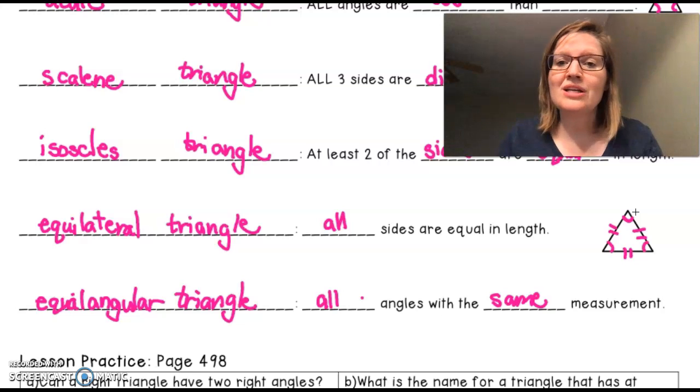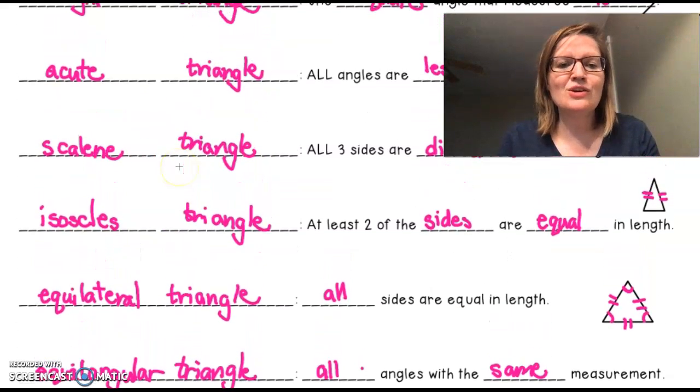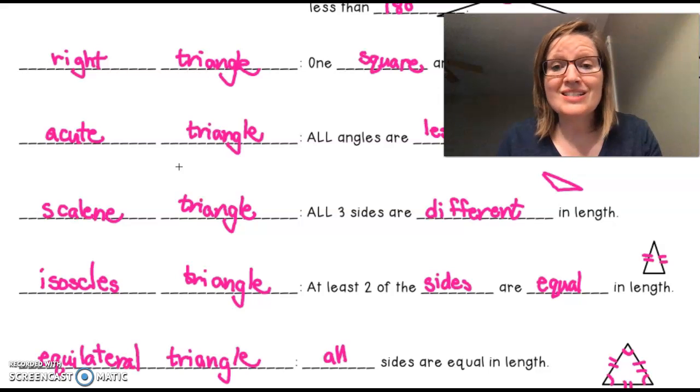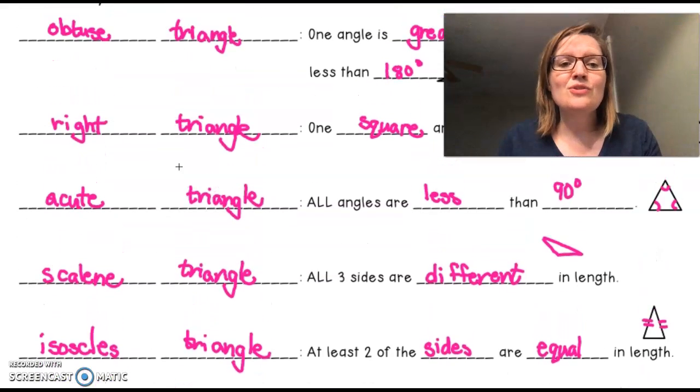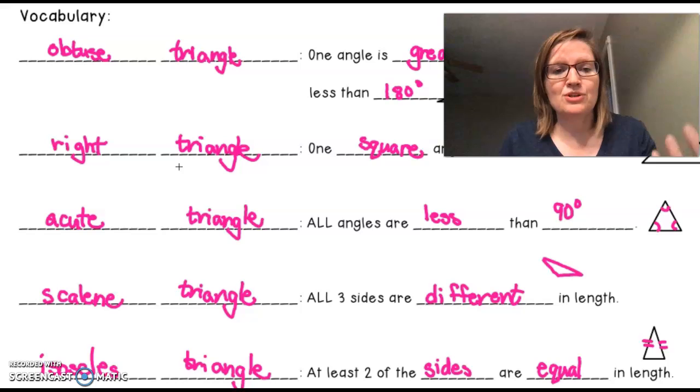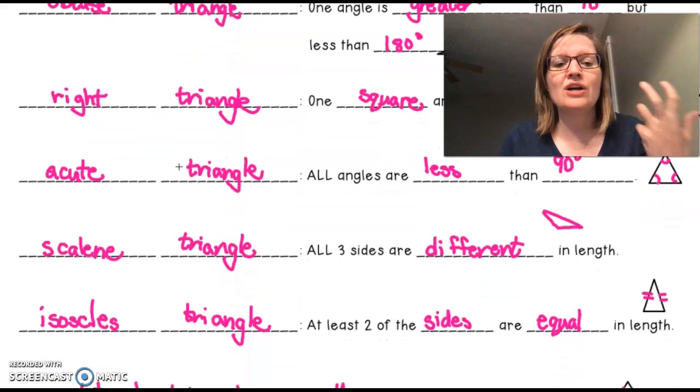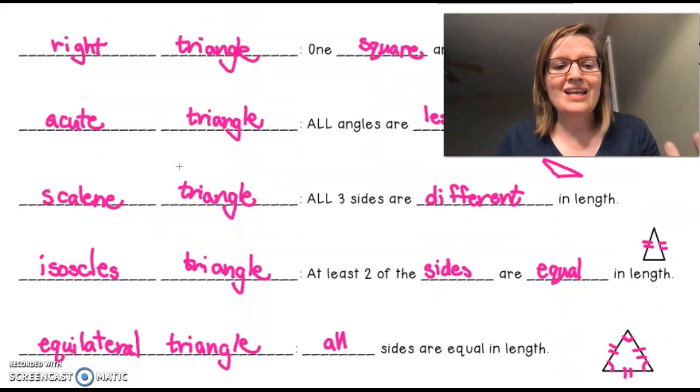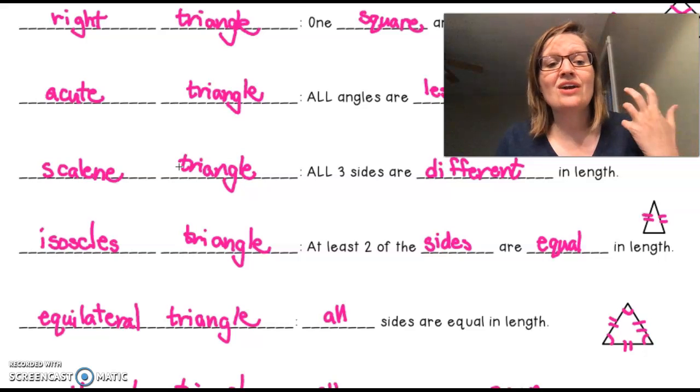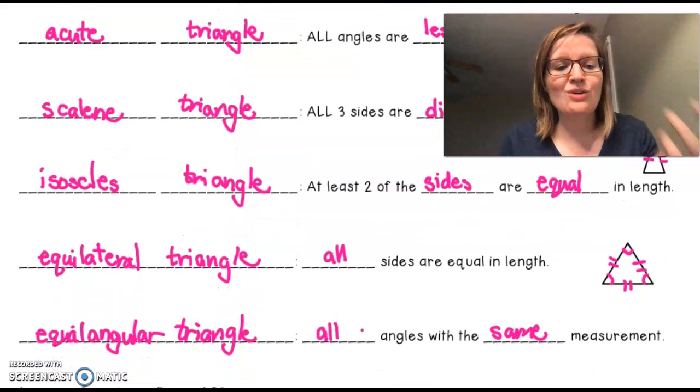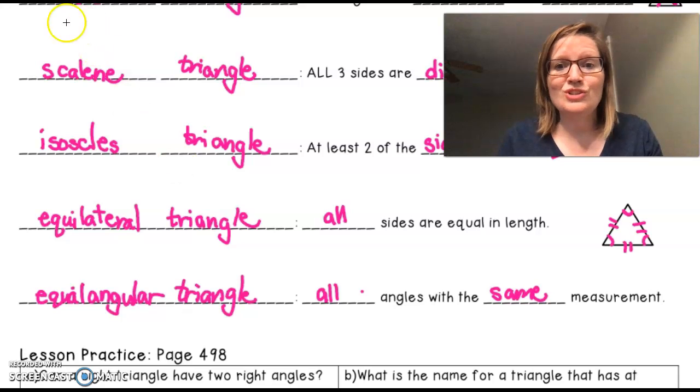Now, I'm going to pause and then we're going to jump into lesson practice. But if you need to remember these, go over your notes. You're going to see these a lot. So I want to make sure that you understand obtuse triangle, right triangle, acute triangle, scalene triangle, isosceles triangle, equilateral triangle, and equal angular triangle. And I'll join you for the practice set.